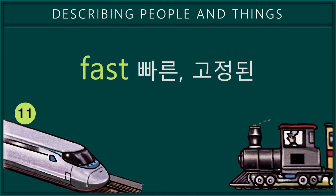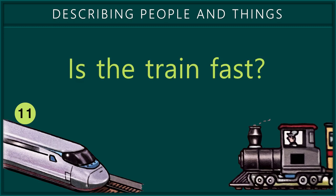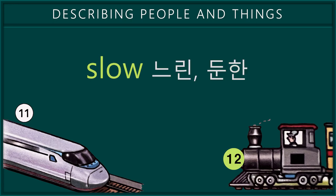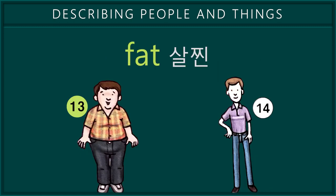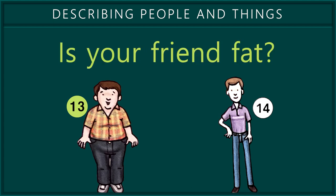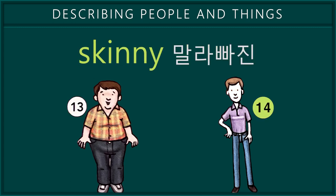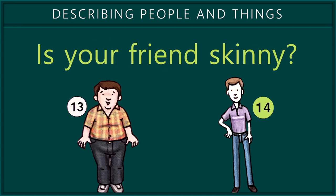11. Fast. Is the train fast? 12. Slow. Is the train slow? 13. Fat. Is your friend fat? 14. Skinny. Is your friend skinny?